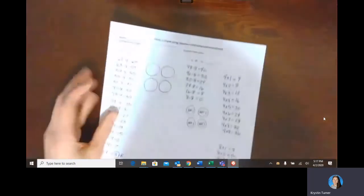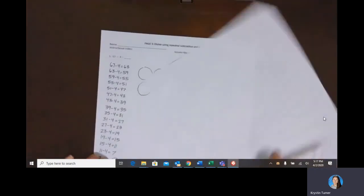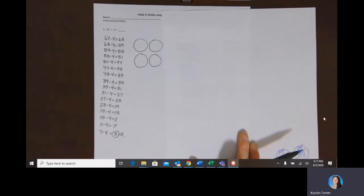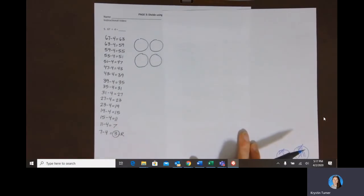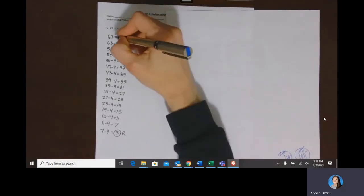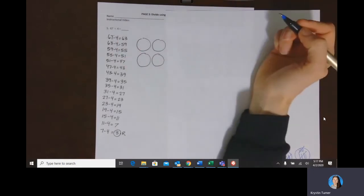So now moving on to 67 divided by 4. So that one takes a lot longer with our subtraction. So again, the subtraction strategy is a good place to start, but it's not an efficient strategy. It takes a really long time.